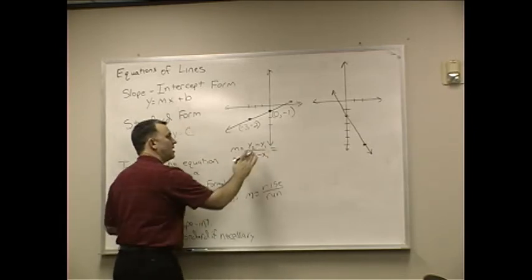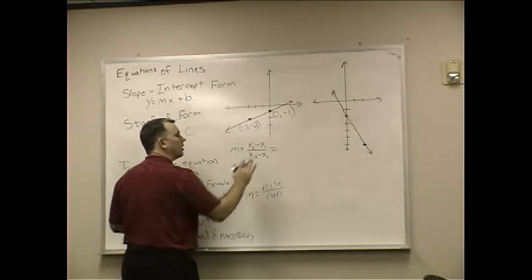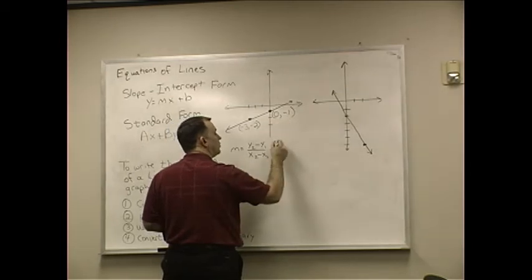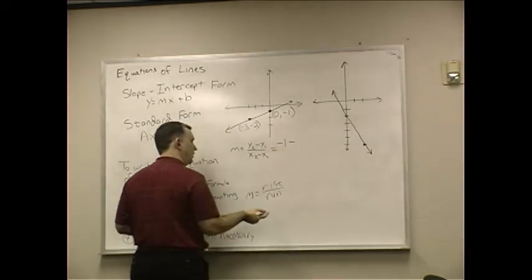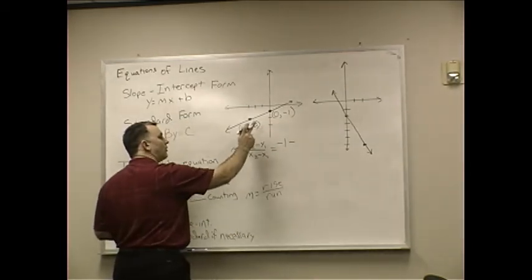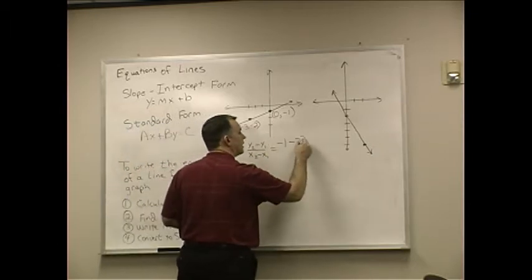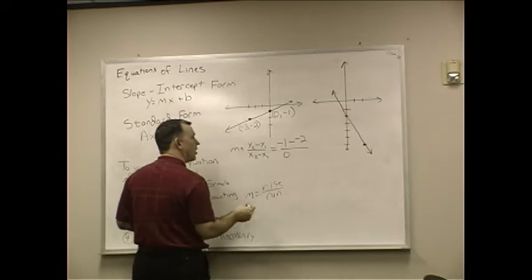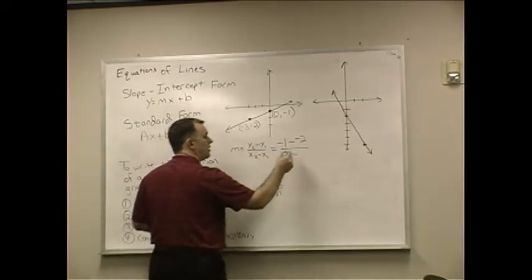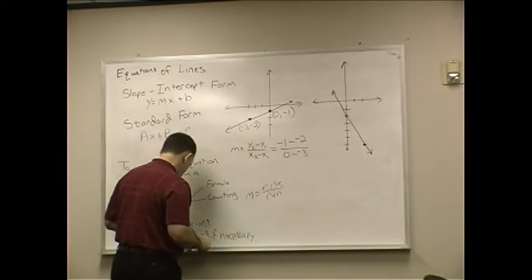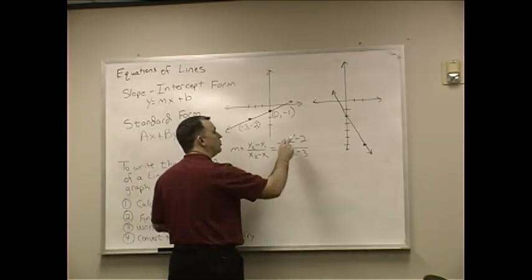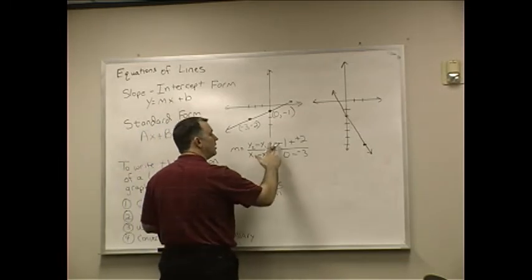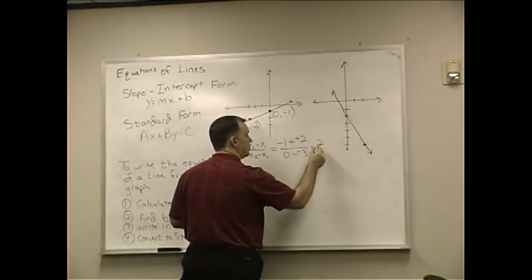So, if we want to calculate m, m equals y2 minus y1 over x2 minus x1. We're going to go ahead. I'm just going to erase this a little bit here. I don't want it to get in the way. y2, the value of y2 is negative 1 minus the value of y1, negative 2. x2, the value is 0 minus x1, the value is negative 3. So, I've got two negatives in a row. That turns that into a plus.